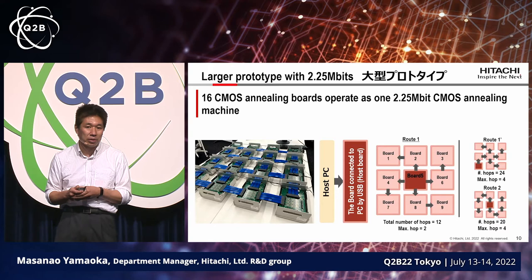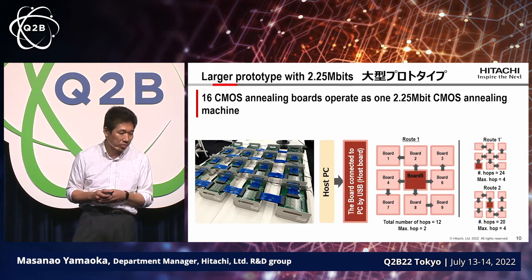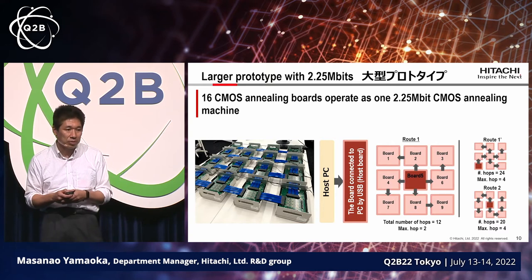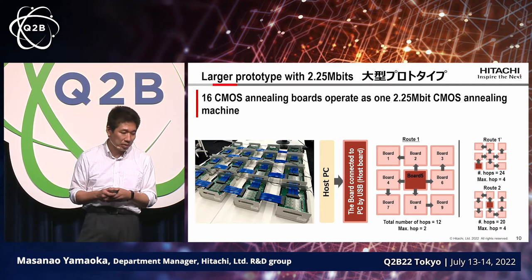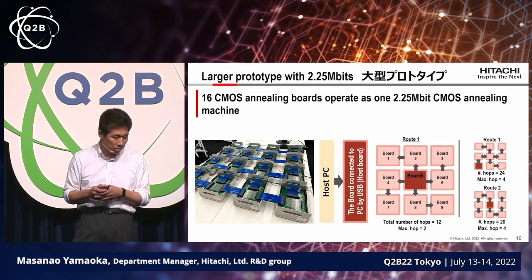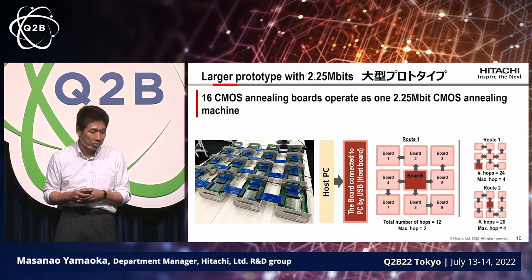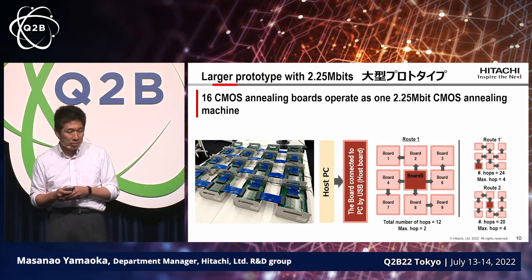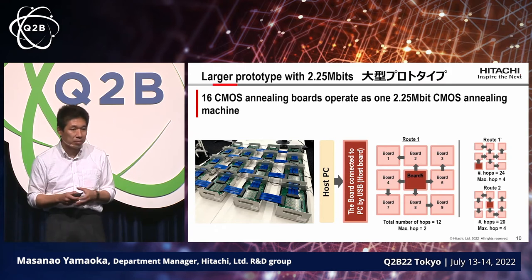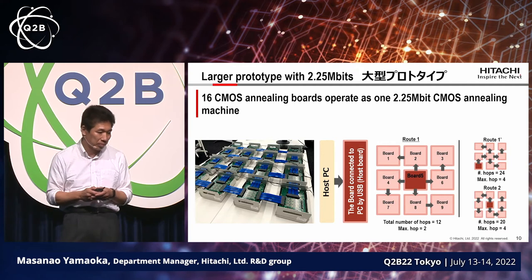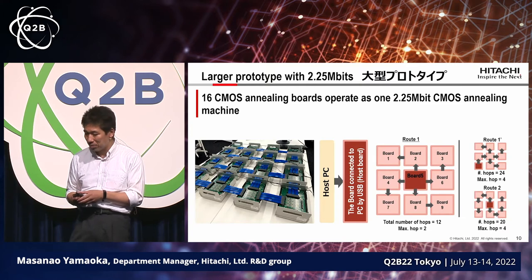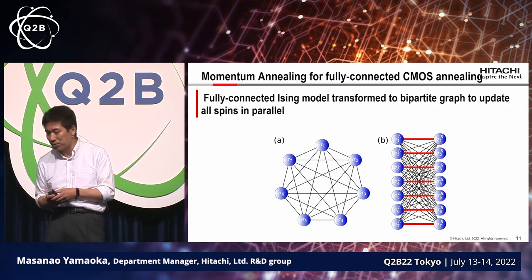If an optimization problem is small it can be solved by previous technologies, so we have to be able to grapple with larger problems. We connect CMOS boards in parallel to try to solve bigger problems — up to 2.25 megabits in our prototype for solving combinatorial optimization problems. Up to this point we use dedicated hardware where spins in the Ising model are sparsely connected, but for some problems a sparse connection is not sufficient.